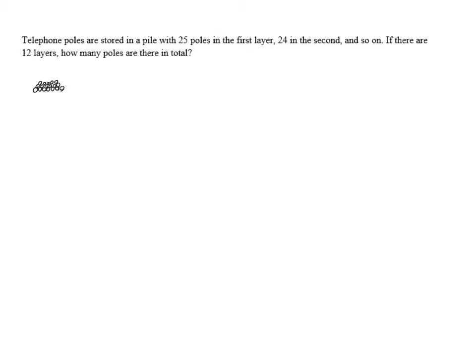So we want to know how many telephone poles there are in total with the first layer having 25 and then the next having 24 and then the next having 23, etc. This is going to be a partial sum of an arithmetic sequence because there's the same common difference as we move from one term to the next. So we use the formula for the partial sum of an arithmetic sequence.